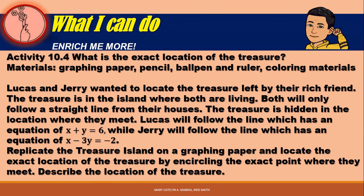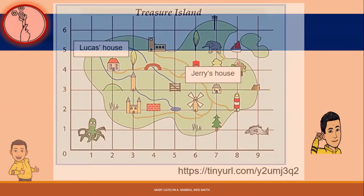Activity 10.4: What is the exact location of the treasure? Materials needed include graphing papers, pencils, ballpens, and rulers. Coloring materials are optional. Lucas and Jerry wanted to locate the treasure left by their rich friend on the island where both are living. Both will only follow a straight line from their houses, and the treasure is hidden at the location where both of them will meet. Lucas will follow the line with an equation of x minus 3y equals negative 2. Replicate the treasure island on a graphing paper, locate the exact point where they meet by encircling it, and describe the location of the treasure. Here is your map with Lucas' house and Jerry's house marked.